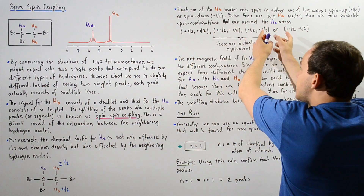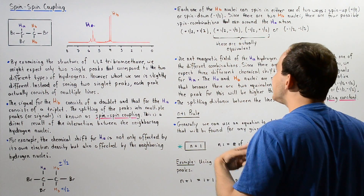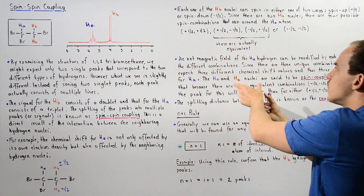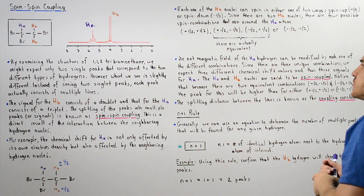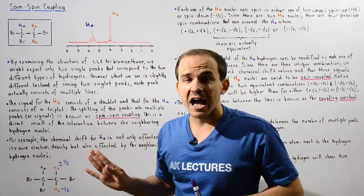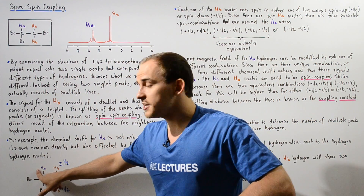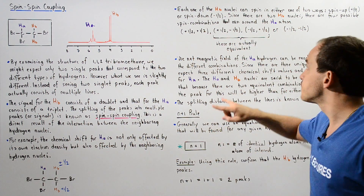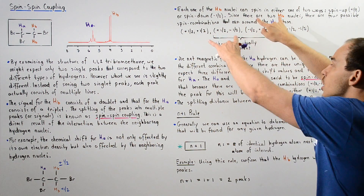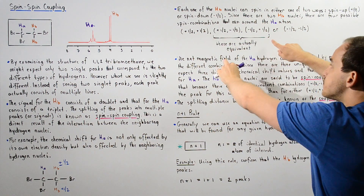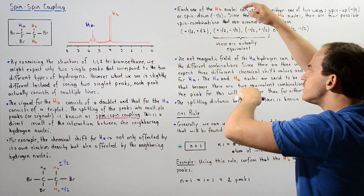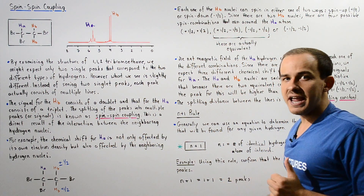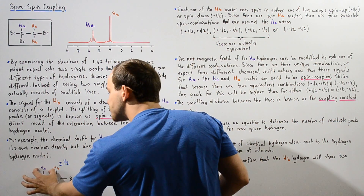Notice that two of those combinations — (+½, −½) and (−½, +½) — are equivalent and produce the same net spin, so they can be combined under one category. This leaves three distinct types of spin environments surrounding HA. Because two combinations are equivalent, their intensity is summed, meaning the middle combination has twice the intensity of the other two. So we have three different chemical shifts for HA, corresponding to three peaks.